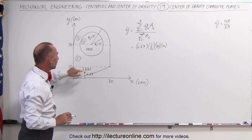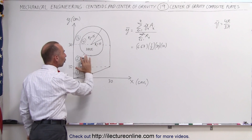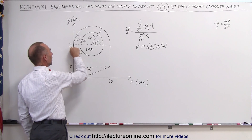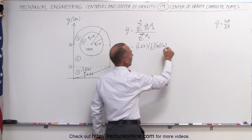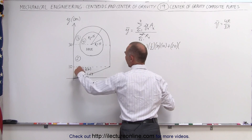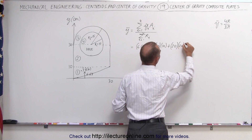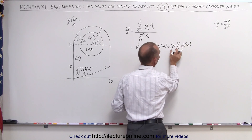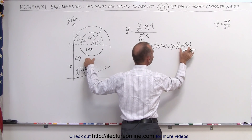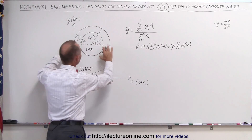The second piece is a rectangle — that's a little bit easier. The center of mass would be right in the middle. We ignore the hole for now; in the y-direction, it would be halfway between 10 and 30, which is 20. So that's 20 times the area of the rectangle, which is a width of 30 and a height of 20 — so 20 times 30. We assume the hole is not there for the rectangle.